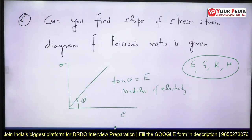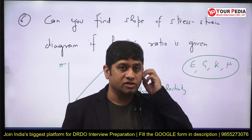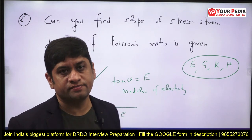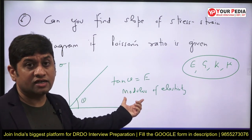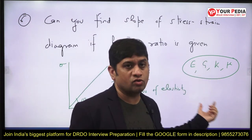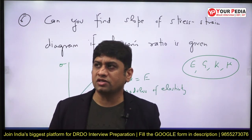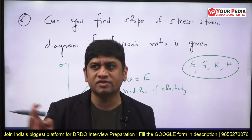They may then ask: if I give you the Poisson's ratio of steel, can you tell me the slope of the stress-strain diagram? There are four elastic properties: Young's modulus, modulus of rigidity, bulk modulus, and Poisson's ratio. Unless you know two of these four, you cannot decode the others. The slope of the stress-strain diagram gives modulus of elasticity, so unless you know both modulus of elasticity and Poisson's ratio you cannot calculate the others. Therefore, the slope cannot be calculated from Poisson's ratio alone. This question checks whether you know this concept.